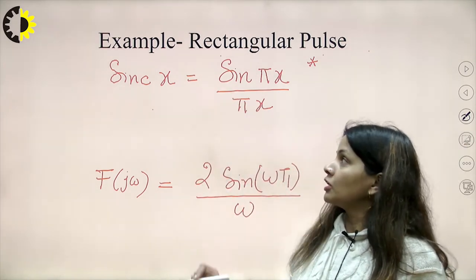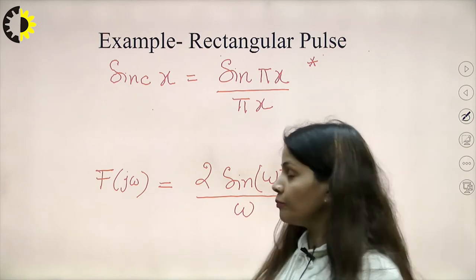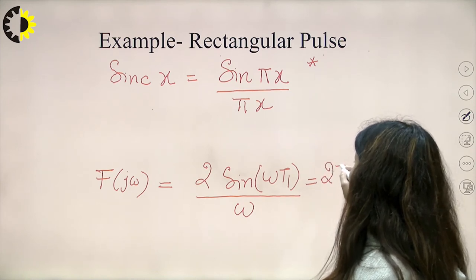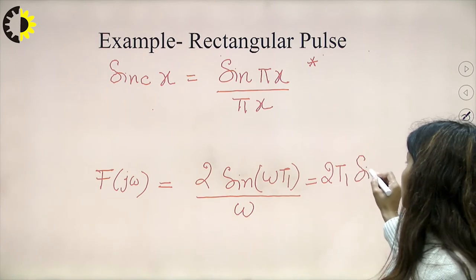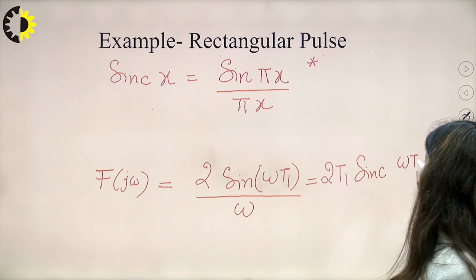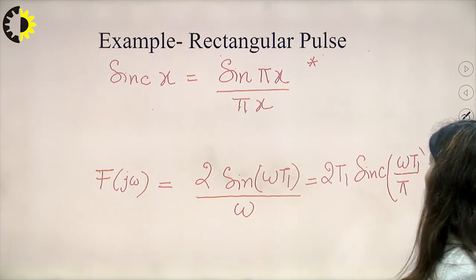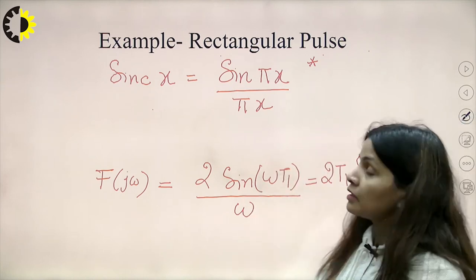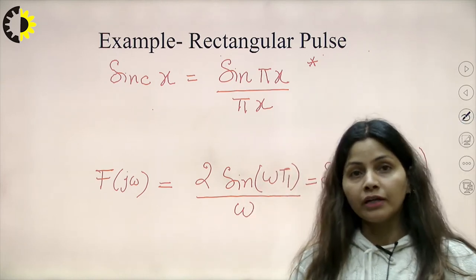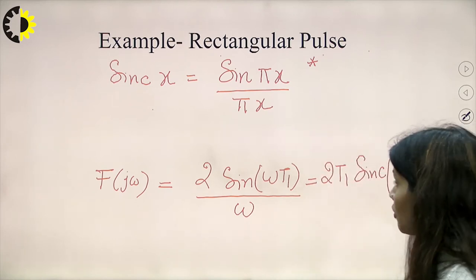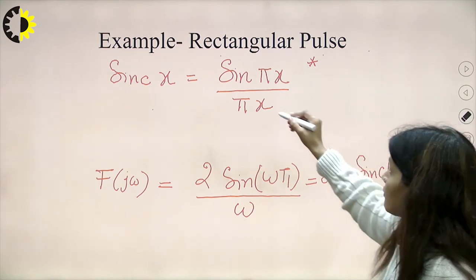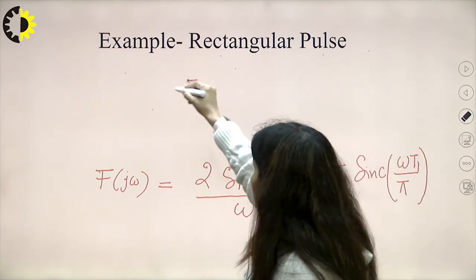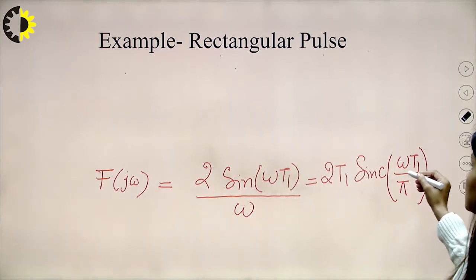We can convert F(jω) in terms of the sinc function. By a few simple manipulations, the Fourier transform of the rectangular pulse can be expressed as 2T₁ · sinc(ωT₁/π). This is the Fourier transform of the rectangular pulse defined as 1 from −T₁ to +T₁.